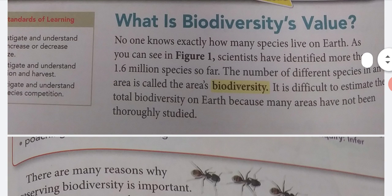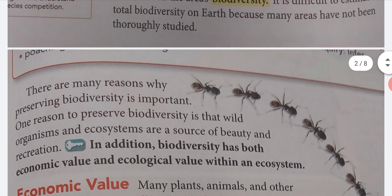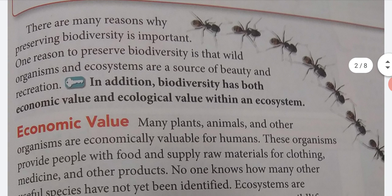What is biodiversity's value? No one knows exactly how many species live on Earth. As you can see in Figure 1, scientists have identified more than 1.6 million species so far. The number of different species in an area is called the area's biodiversity. It is difficult to estimate the total biodiversity on Earth, because many areas have not been thoroughly studied. There are many reasons why preserving biodiversity is important. One reason is that wild organisms and ecosystems are a source of beauty and recreation. In addition, biodiversity has both economic value and ecological value within an ecosystem.